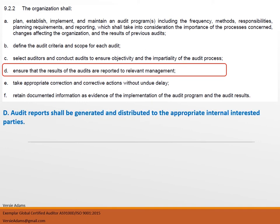AS 9.2.2(d) — ensure that the results of the audits are reported to relevant management. In order for your audit program to be effective, audit reports need to be generated and distributed to the appropriate internal interested parties. This is typically the audit manager, the audit program director, department heads, the president, and CEO. All of those individuals are internal interested parties that the audit results should be distributed to without delay.